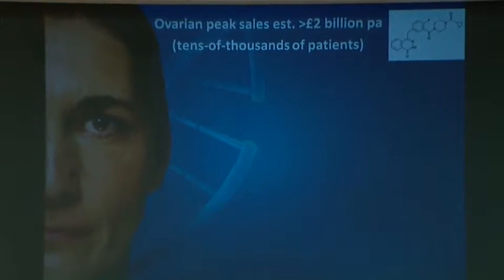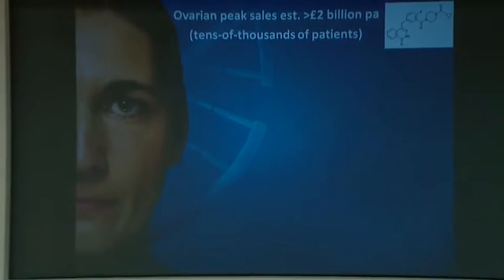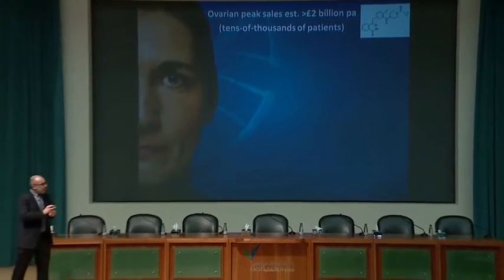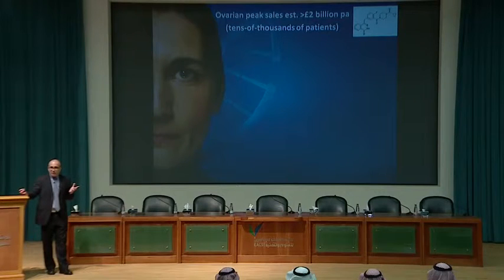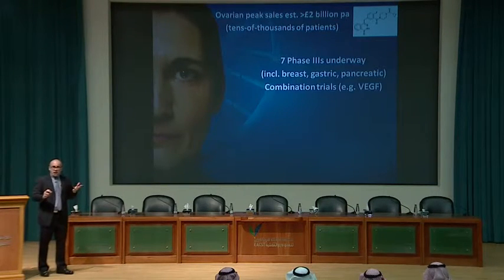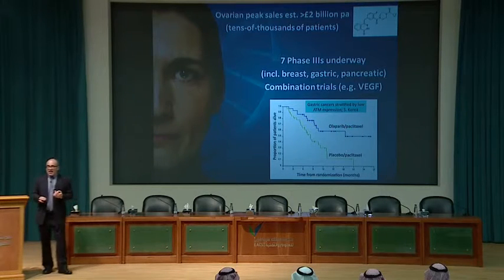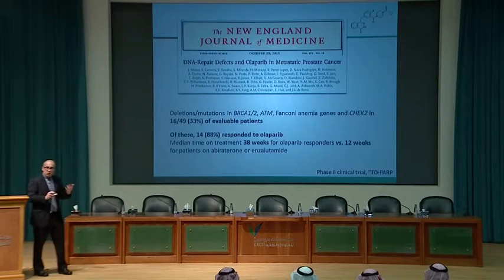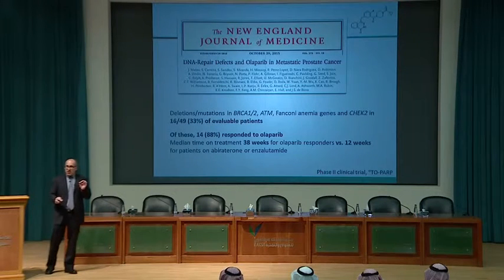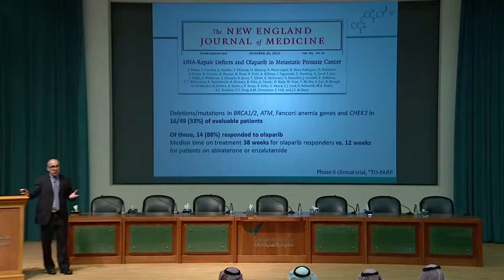AstraZeneca is set to make substantial profits from olaparib — I won't make a single cent from it now — but the reason I'm excited is that tens of thousands of patients are expected to benefit. There are opportunities in pancreatic, breast, and other cancers, as well as in combination trials, including one currently running in Asia looking at gastric cancer. Very recently, data indicate that up to 30% of advanced metastatic terminal prostate cancer will respond to olaparib.